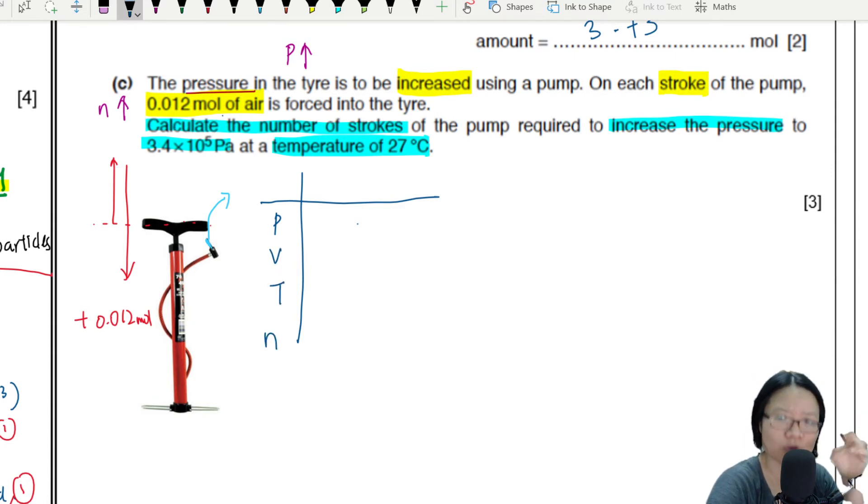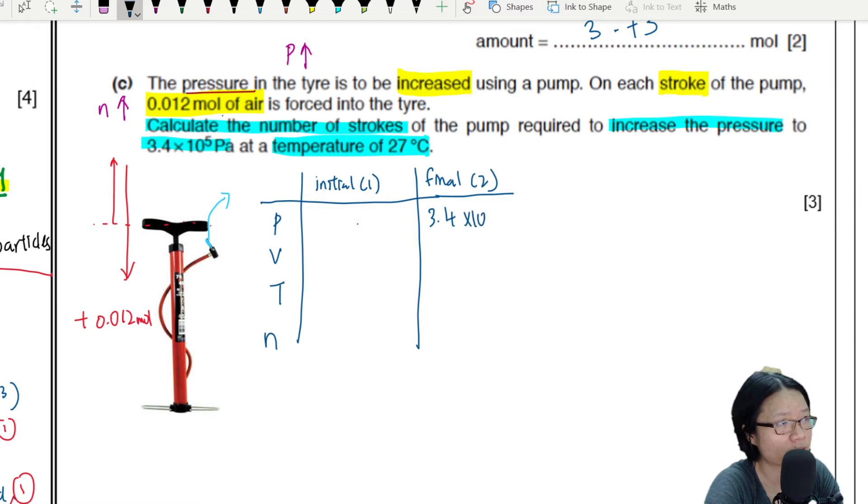So here we will have initial condition - initial condition, I'm going to call this 1 - and final condition. So you don't have to do this if you are very organized and you're not afraid of substituting wrong values, but I am, so I'm going to do this.